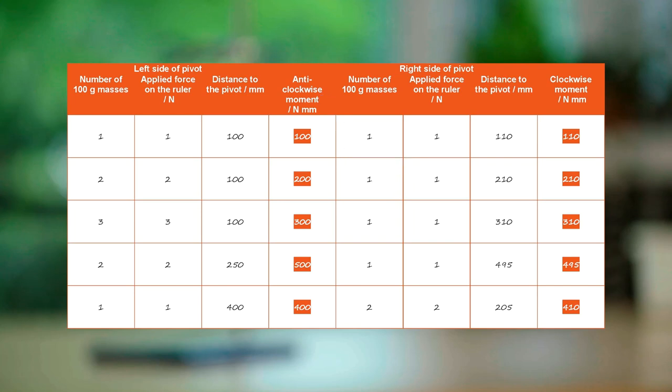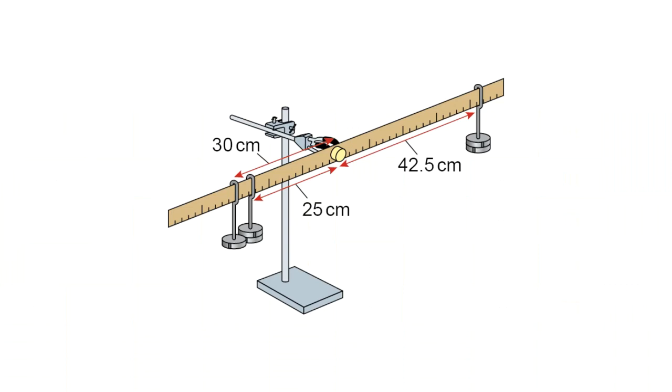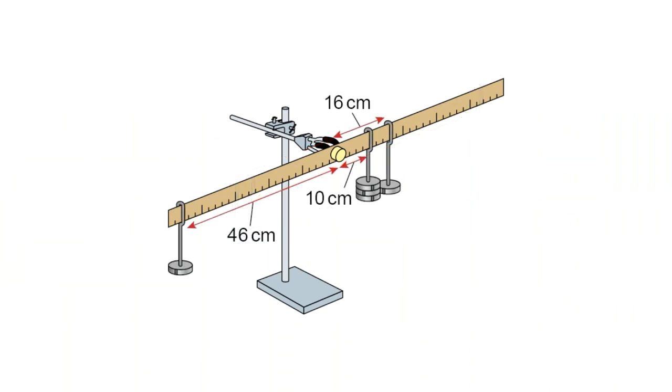Different sets of masses at different distances on the left hand side can create more than one anti-clockwise moment. Similarly, more than one clockwise moment can be created by adding additional sets of masses to the right hand side of the meter rule.